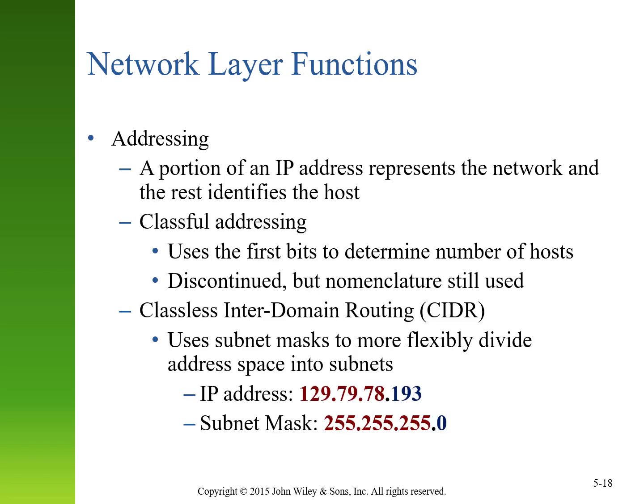In most networks, part of the IP address represents the network where you reside, and the rest identifies the specific device. One version is classful addressing, where the first bits determine the number of hosts, though this nomenclature is rarely used today. Classless inter-domain routing uses subnet masks for more flexibility. For example, 129.79.78 represents a specific network and 193 represents the specific device. The subnet mask for this network would be 255.255.255.0 — the 255s reserving the first three octets for the network, and the 0 reserving the last 8 bits for individual devices.